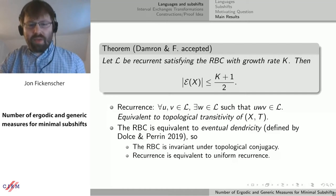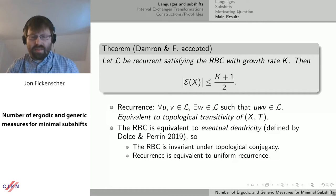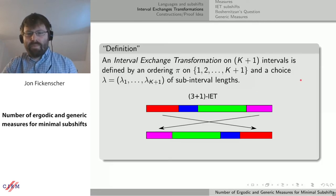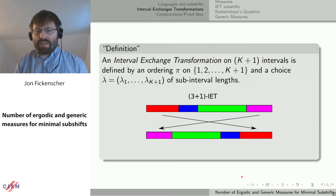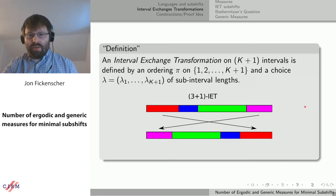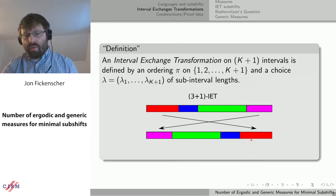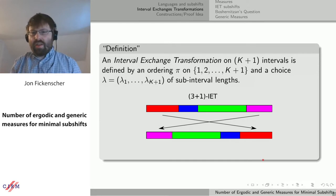I'll briefly explain why these specific conditions came up from a dynamical perspective. There's a class of dynamical systems called interval exchange transformations. You define an IET with length parameters that cut your interval into k+1 pieces, and a permutation π tells you in what order to rearrange all of these to get back to another interval. For example, this is the 4,3,2,1 permutation: the first interval goes to position four, second goes to three, three goes to two, and so on. While you're doing something defined by a permutation, the underlying dynamical system is much richer.